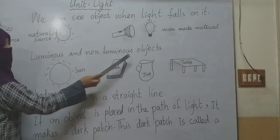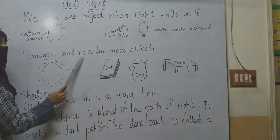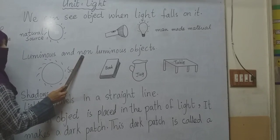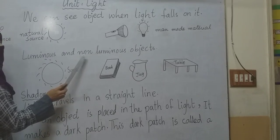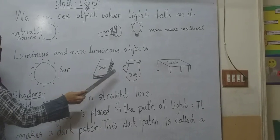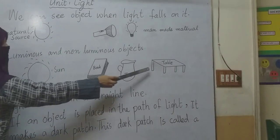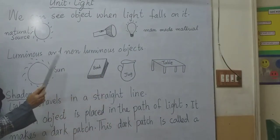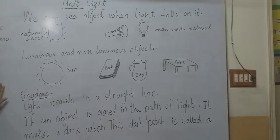Non-luminous objects: some objects which do not give out light. Like a book, jug, table, and so many other things.